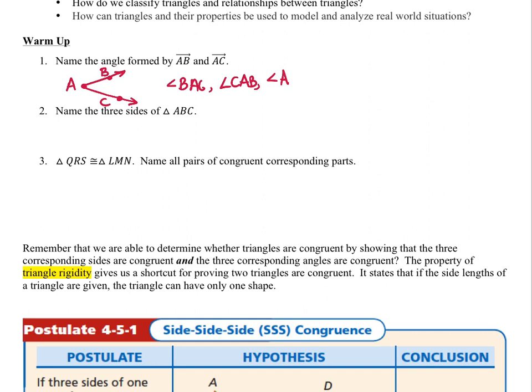Question 2 asks us to name the three sides of triangle ABC. The triangle has three sides: the first one is segment AB, the second side is segment BC, and the third is segment AC. Any of these can be written in the opposite order, so segment AB is the same as segment BA, and so on.